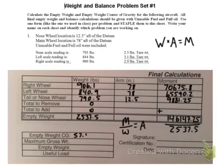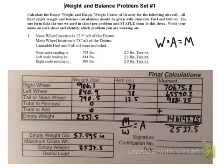That number is written in as the empty weight CG — 57.6. You also carry your empty weight down to the very bottom of the sheet. That's the first weight and balance problem, and the other ones are very similar.